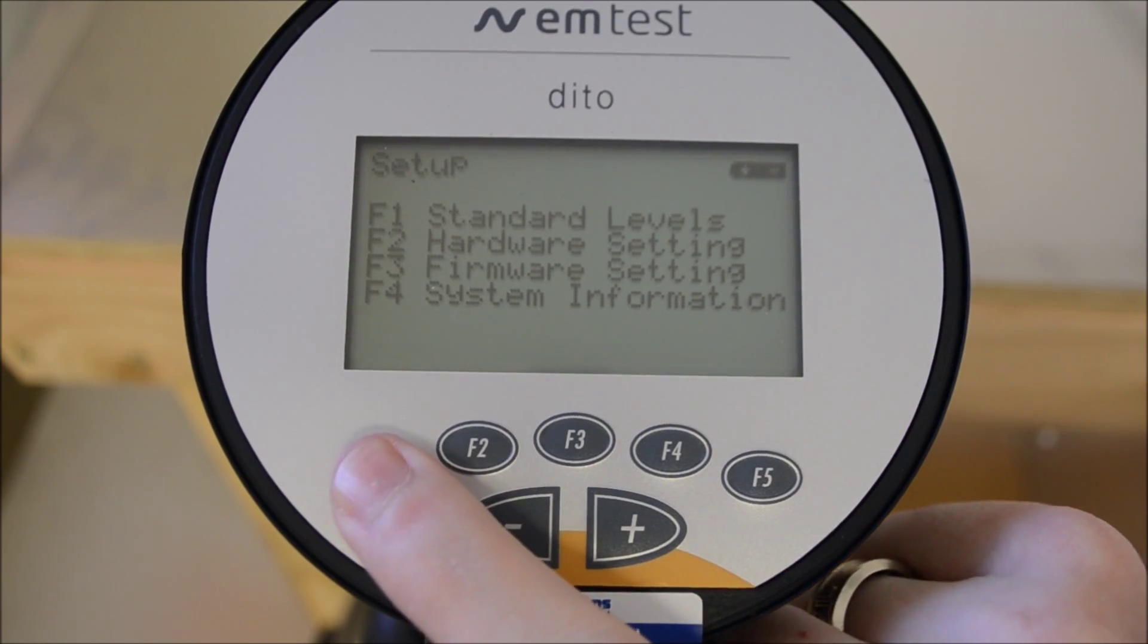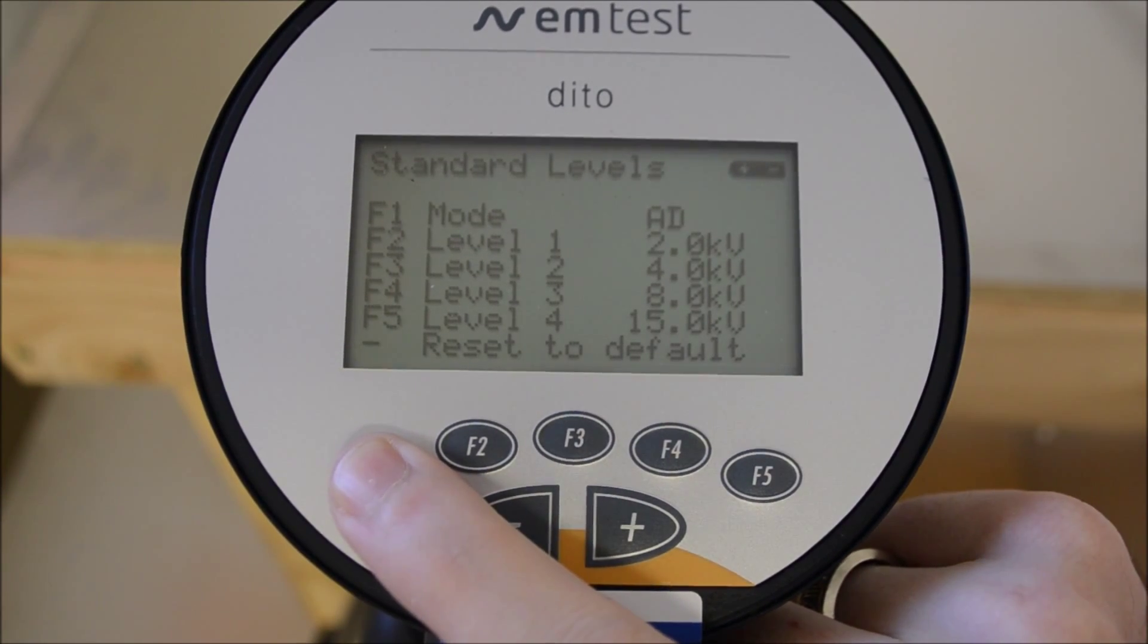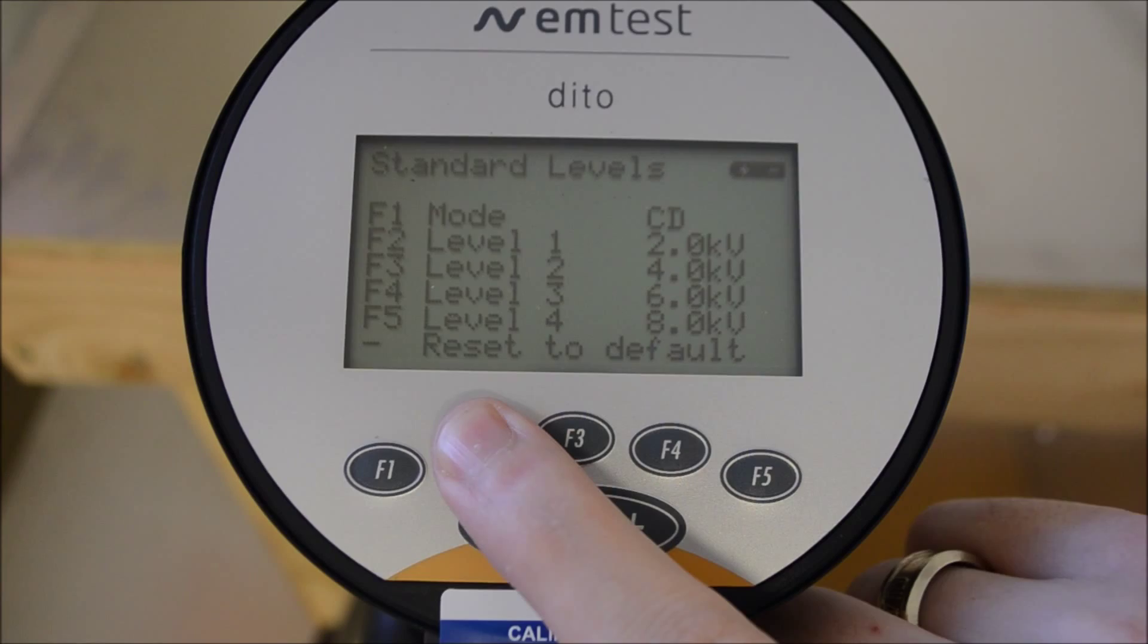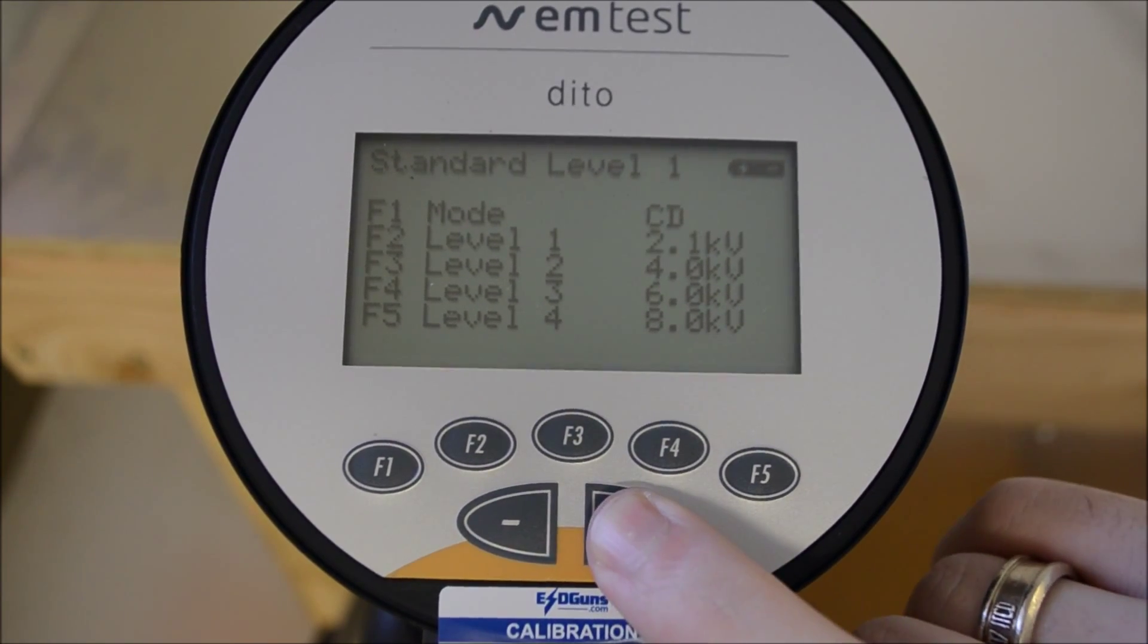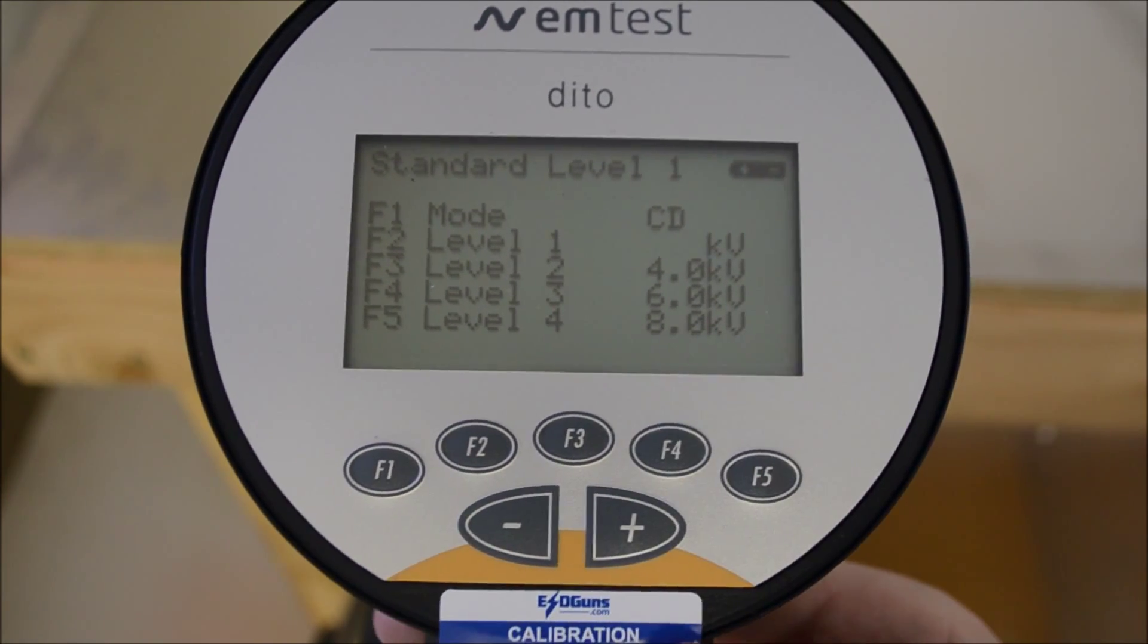F5 will enter the setup menu. Followed by F1 we can manipulate the pre-programmed IEC test levels. In contact discharge mode we'll change level 1 to 2.5 kb.